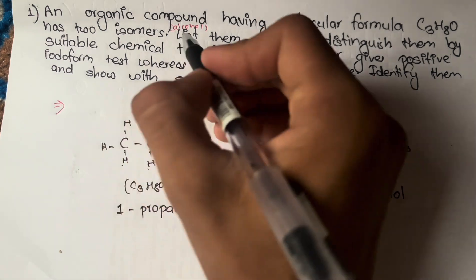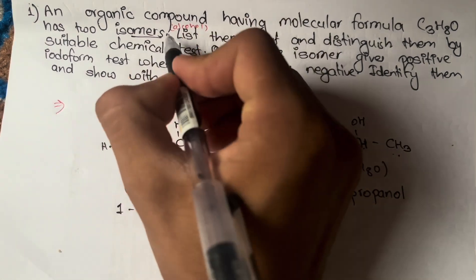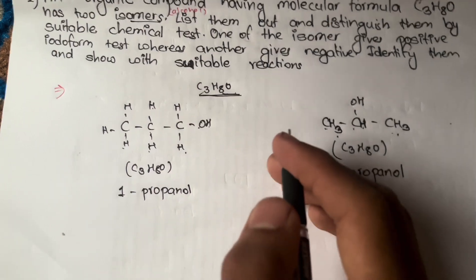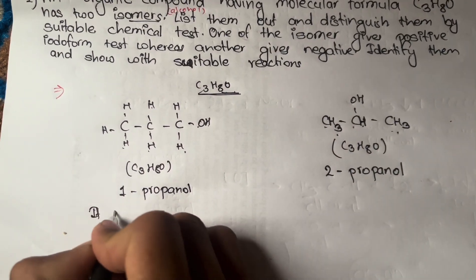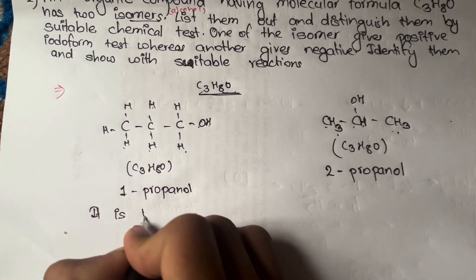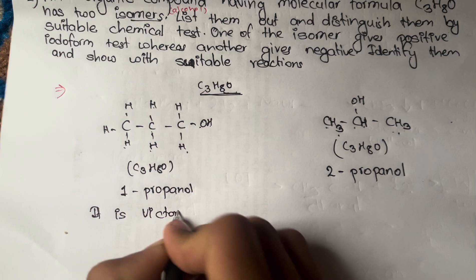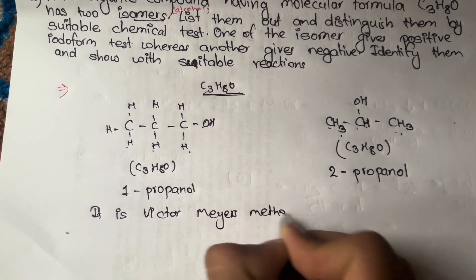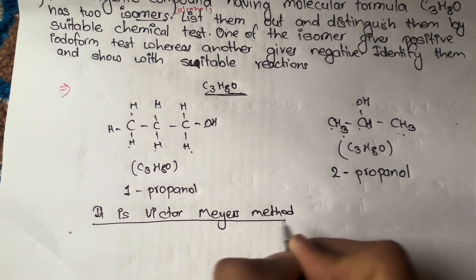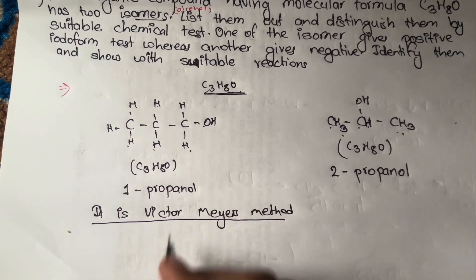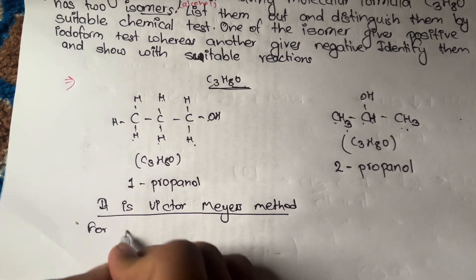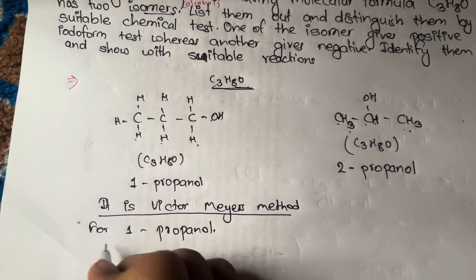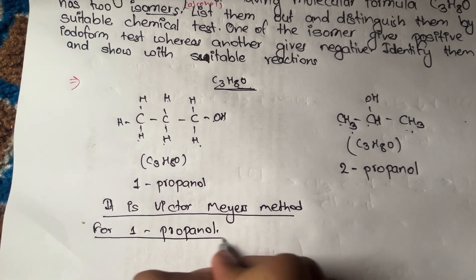We will now distinguish these isomers by a suitable chemical test. This is the Victor Meyer method. We will use the Victor Meyer method to separate and identify them — 1-propanol and 2-propanol.